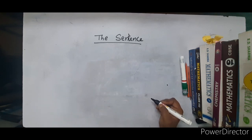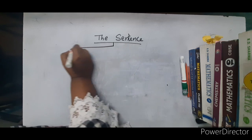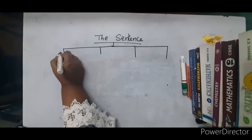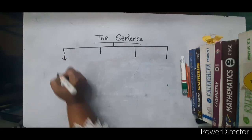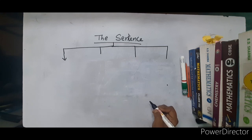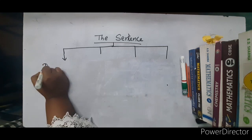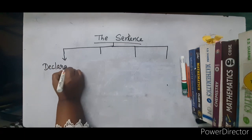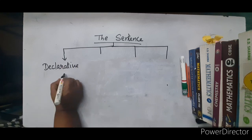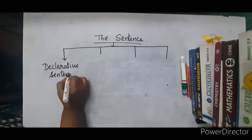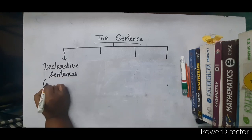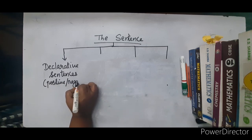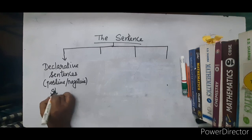Any sentence is of four types. There are four types of sentences. The first type of sentence is declarative sentences. Declarative can also be known as statements. They can be either positive or negative and are also known as statements.